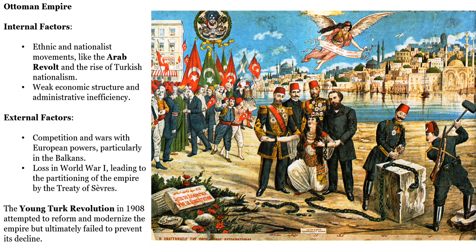External factors: competition in wars with European powers, particularly in the Balkans. Loss in World War I, leading to the partitioning of the empire by the Treaty of Sevres. The Young Turk Revolution in 1908 attempted to reform and modernize the empire, but ultimately failed to prevent its decline.